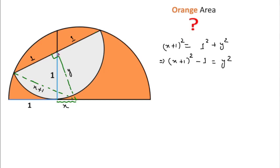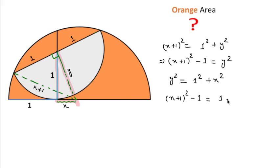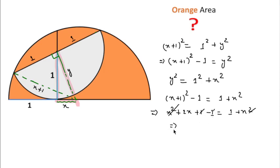I will also apply the Pythagorean theorem for the second triangle: y² = 1² + x². Substituting in place of y², we get (x+1)² - 1 = 1 + x². Expanding: x² + 2x + 1 - 1 = 1 + x². The x² terms cancel and the ones cancel, so we get 2x = 1.